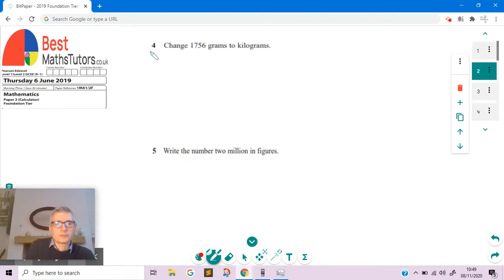Looking at question four now, we've got to change 1,756 grams into kilograms. To do this, we need to know that 1,000 grams is equal to one kilogram. So if we want to change from grams to kilograms, what we'd have to do is divide by 1,000.